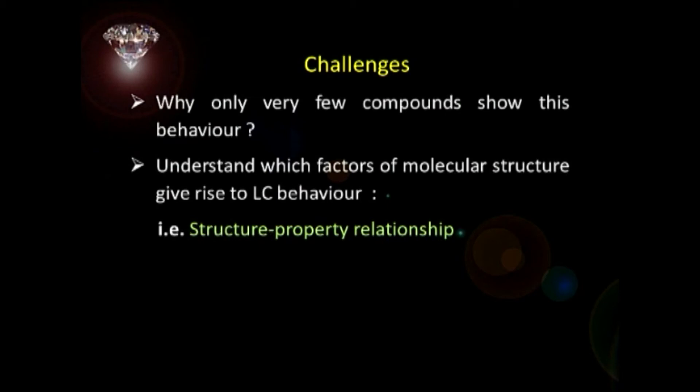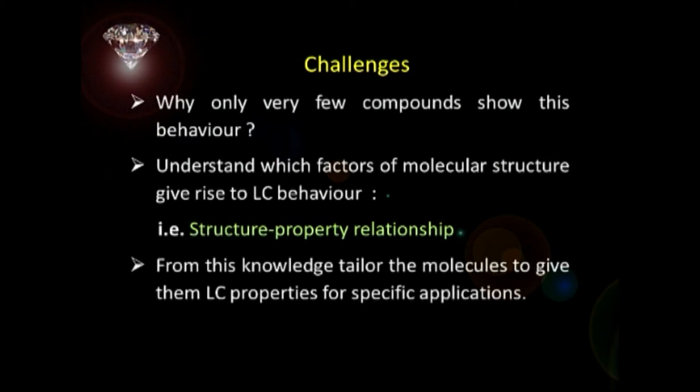That means we must understand structure-property relationship. The first attempt was made by Professor Gray of Hull University, and most of our understanding of this phenomenon — the structure-property relationship — is due to his contributions. From this knowledge, we can tailor molecules to give liquid crystalline properties for specific applications. Molecules that exhibit liquid crystalline phases are called mesogens — intermediate phases.